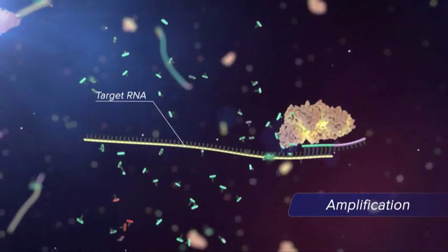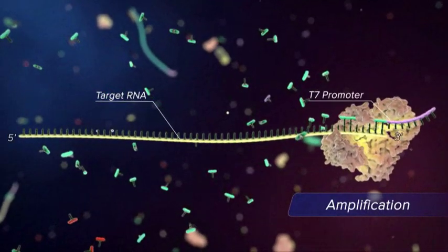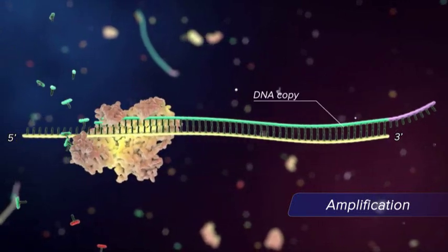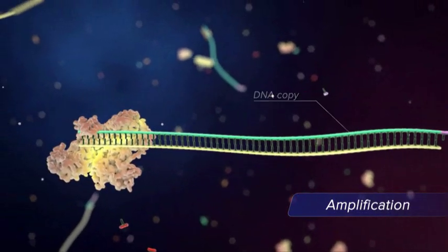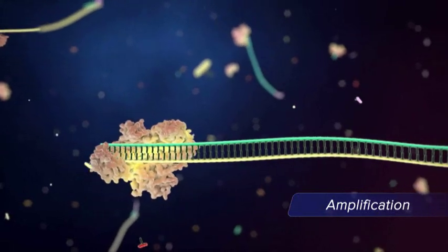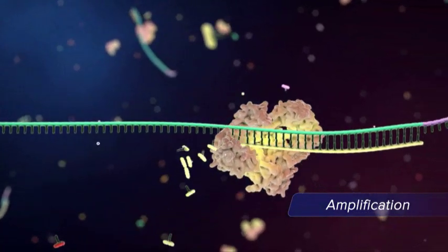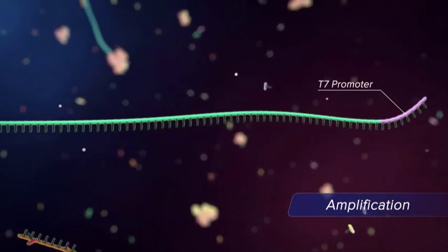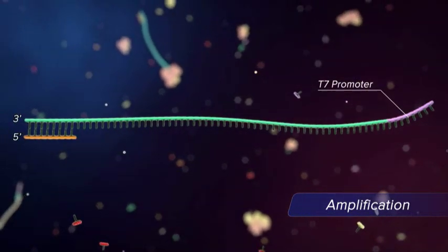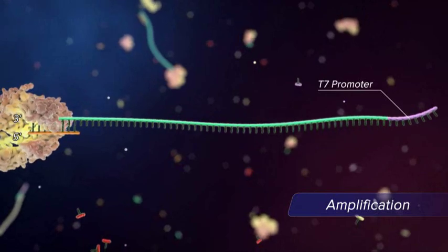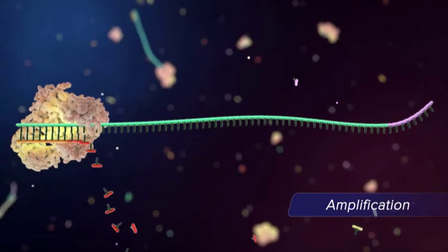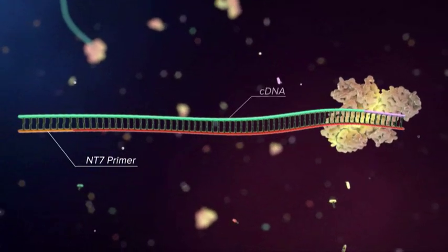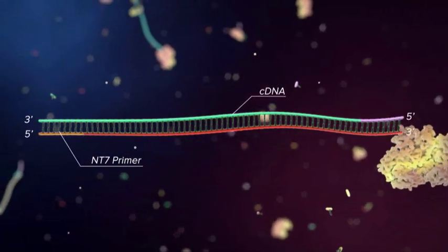The target RNA, hybridized to the T7 promoter primer, is acted upon by reverse transcriptase to generate a complementary DNA copy. This same enzyme digests the original target from the resulting RNA-DNA duplex, leaving single-stranded DNA, which includes the T7 promoter. This DNA copy serves as a template for the hybridization of a second target-specific oligonucleotide, the non-T7 primer. This enables reverse transcriptase to create a double-stranded DNA.